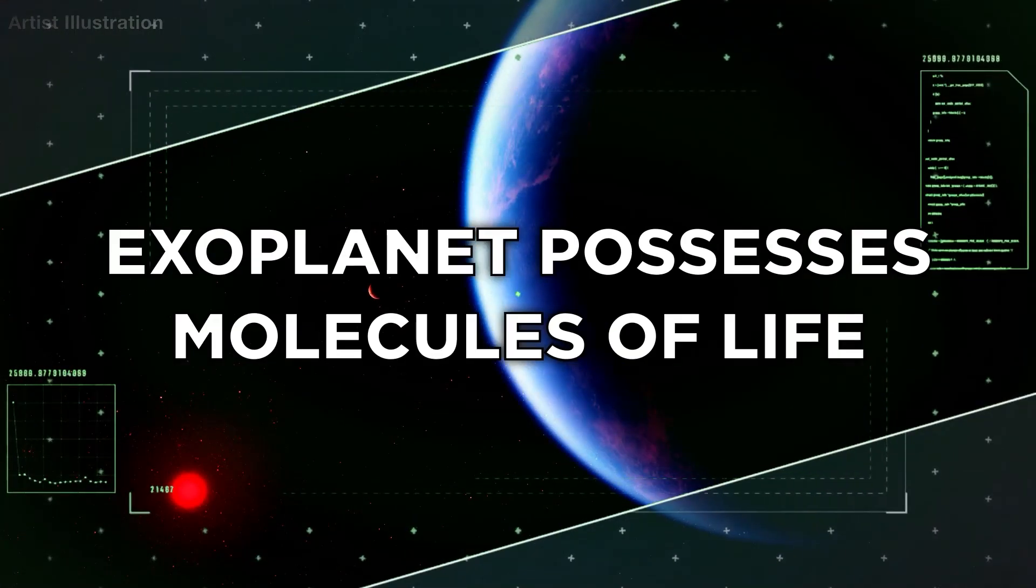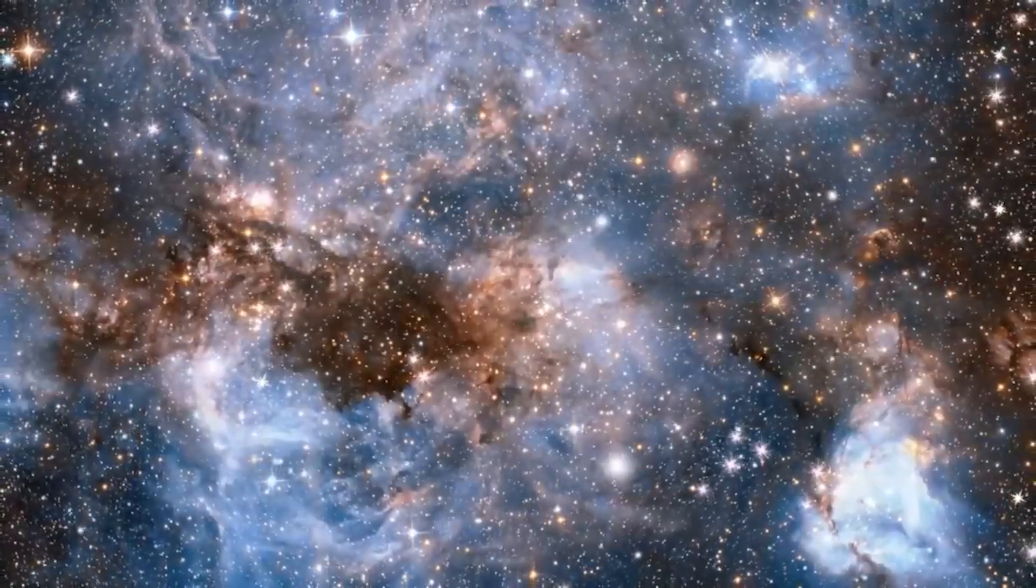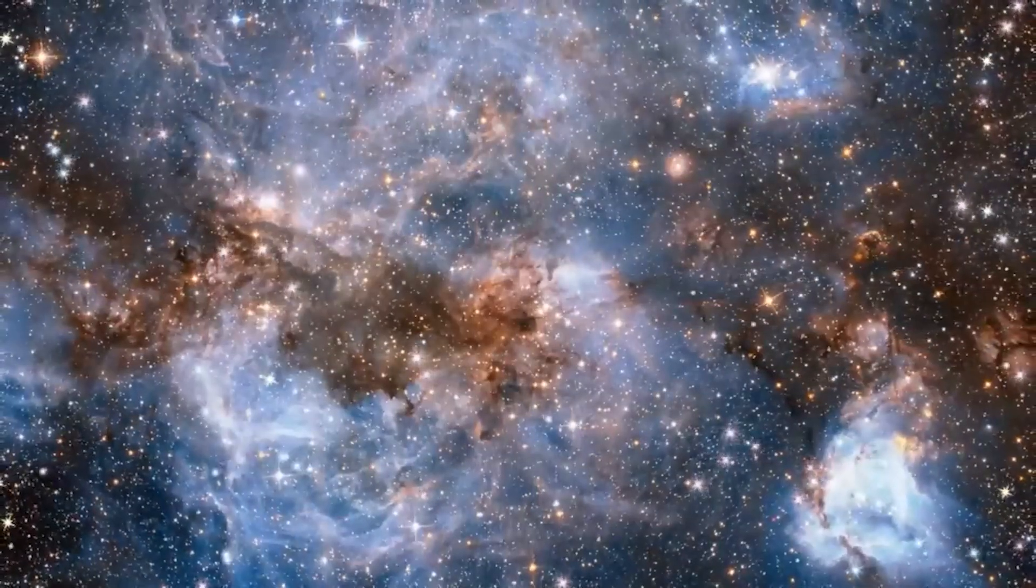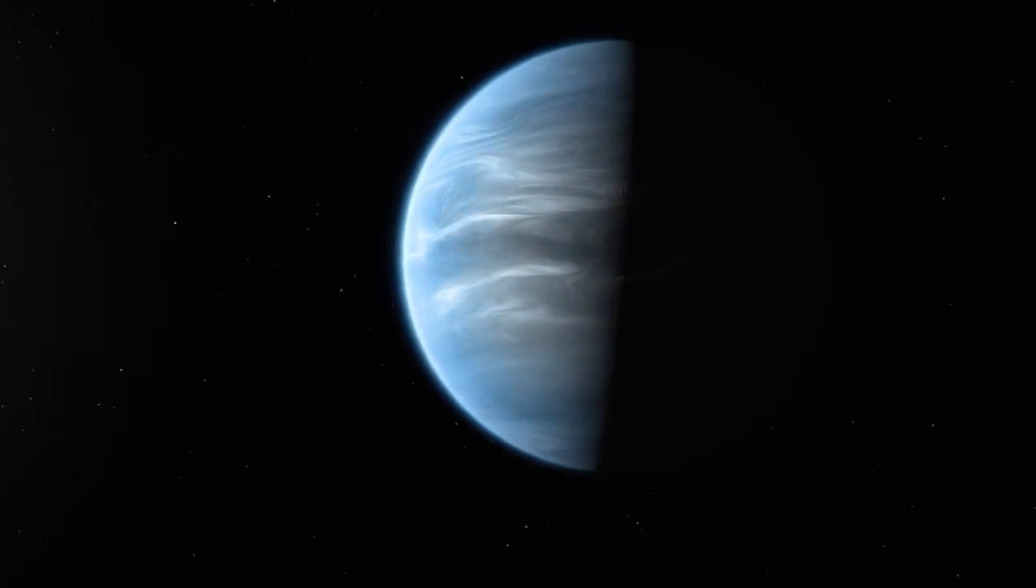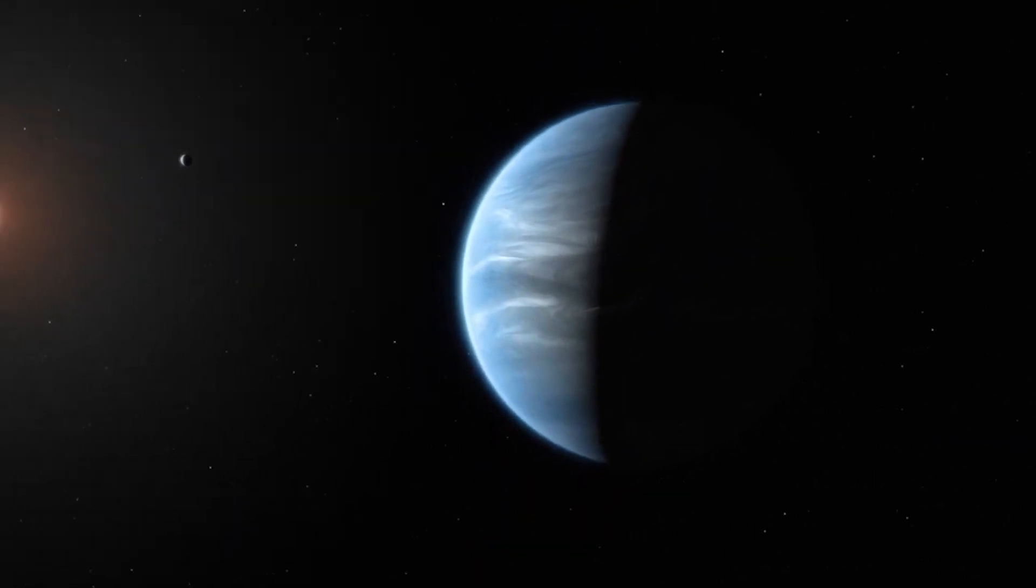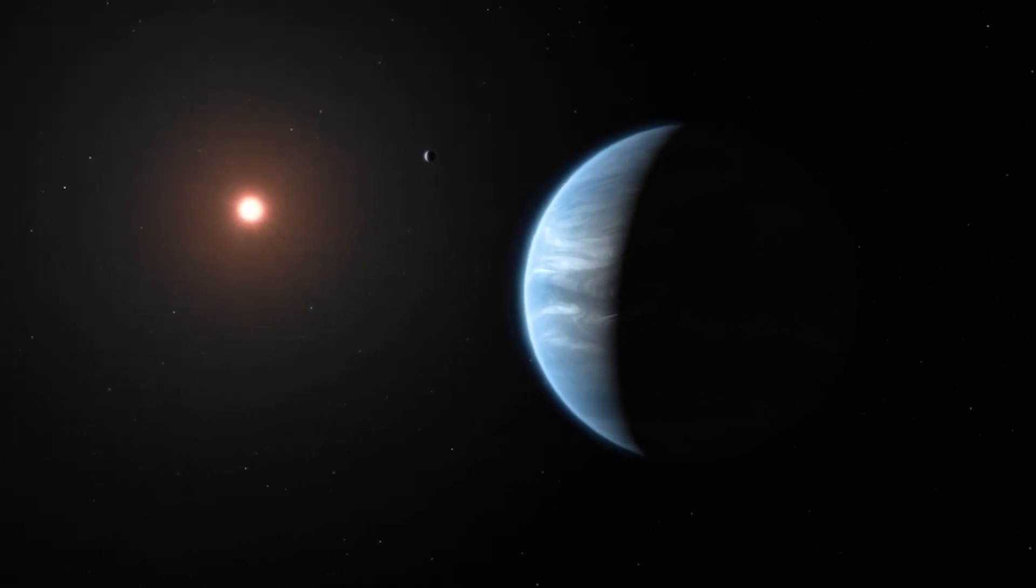Exoplanet possesses molecules supportive of life. In September, the James Webb Space Telescope made a significant discovery by detecting methane and carbon dioxide in the atmosphere of an exoplanet called K2-18b. This distant exoplanet orbits a cool star located 120 light-years away from Earth and is larger than our planet but smaller than the giant planets in our solar system.